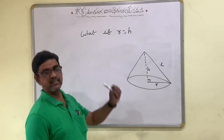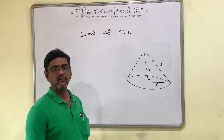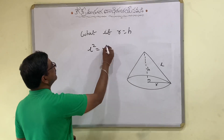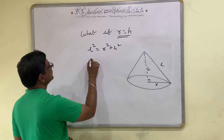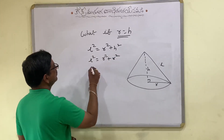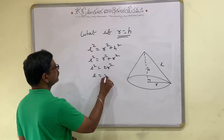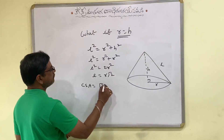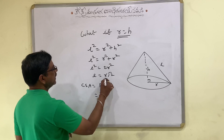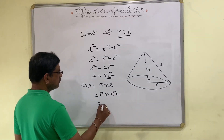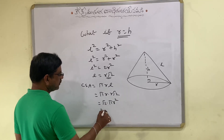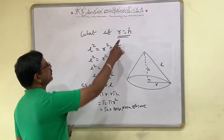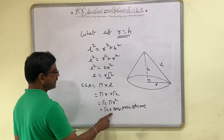Now let us consider another object: cone. What happens when R is equal to H for a cone — what will be the curved surface area, total surface area, and volume? We know that slant height L square equals R square plus H square. If R is equal to H, then L square equals R square plus R square, so L square equals 2R square, giving L equals R root 2. For the curved surface area, we know it is πRL. So πR into R root 2 becomes root 2 times πR square. That means when R equals H, the curved surface area of cone equals root 2 times the base area of the cone.